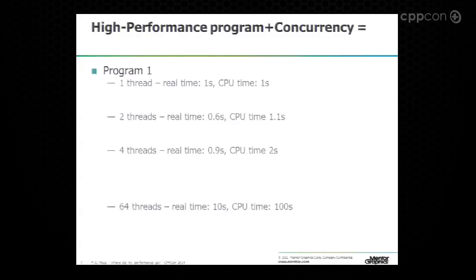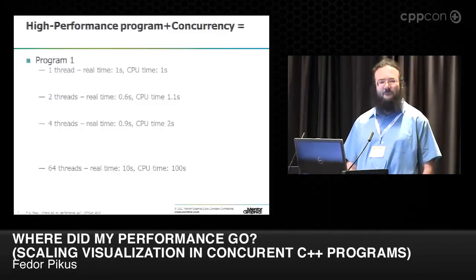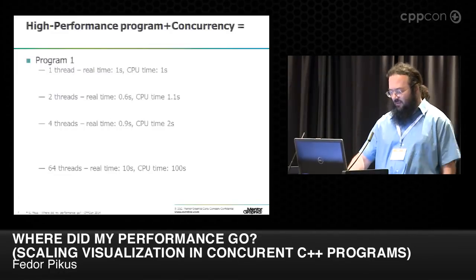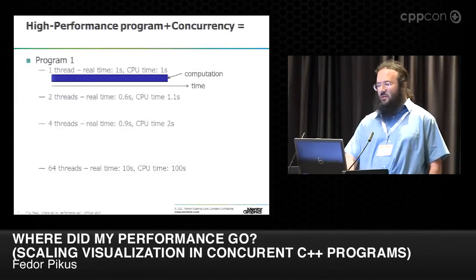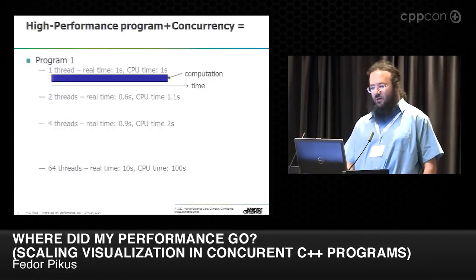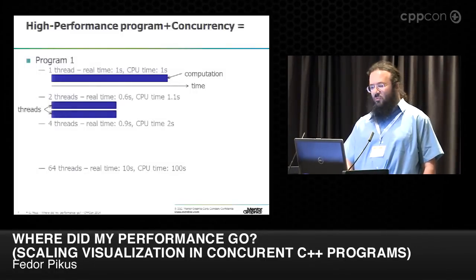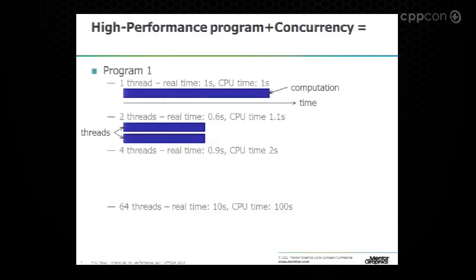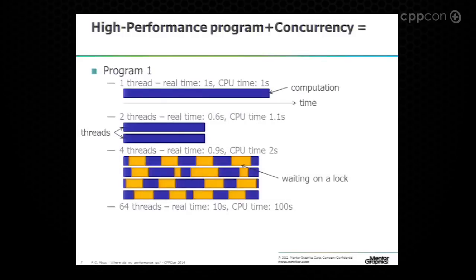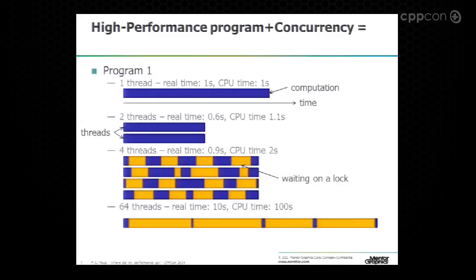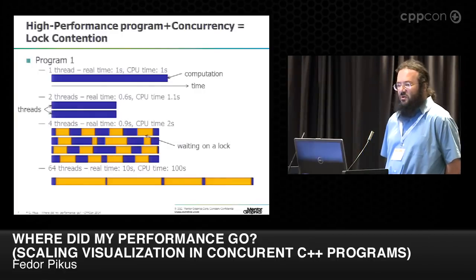The first program started to scale, then stopped and went into extreme negative scaling. If we had a timeline — time going left to right, with each bar representing a unit of computation — on two threads we see almost half the time, just a little over. On four threads, we start seeing waiting on locks on all four threads. On 64 threads, we spend all of our time waiting on locks basically. That is the symptom of extreme lock contention.